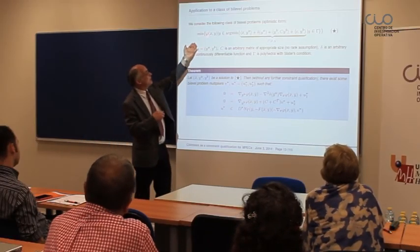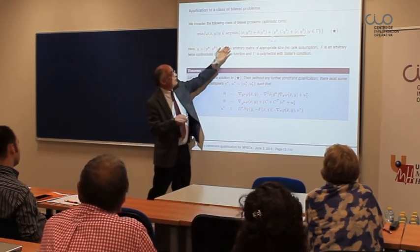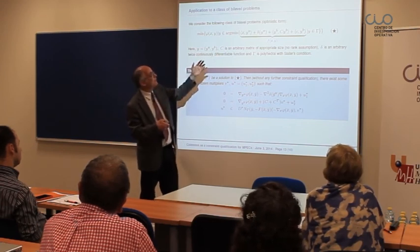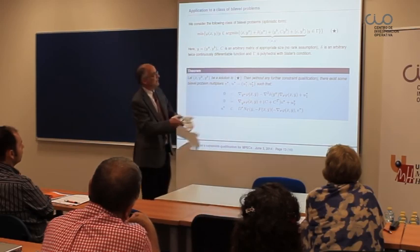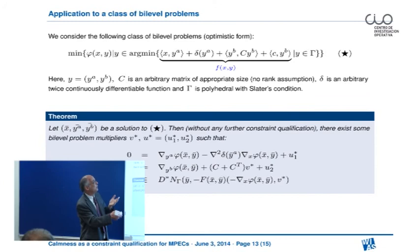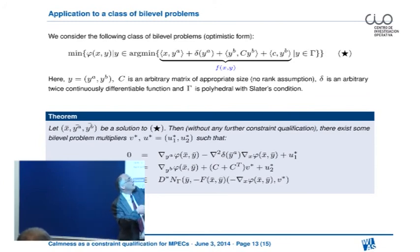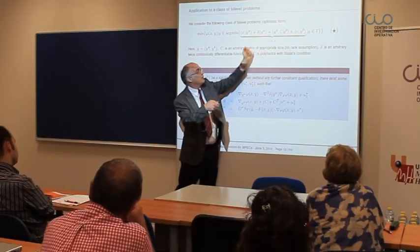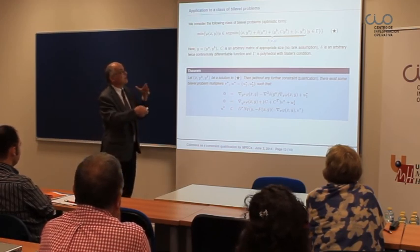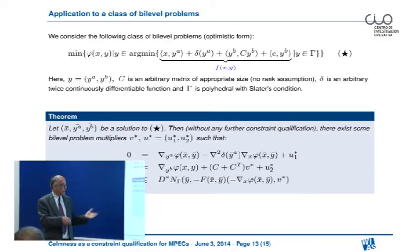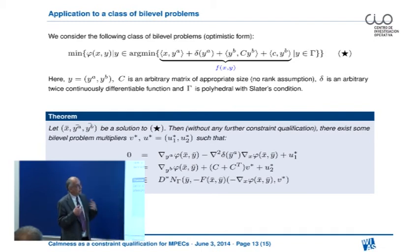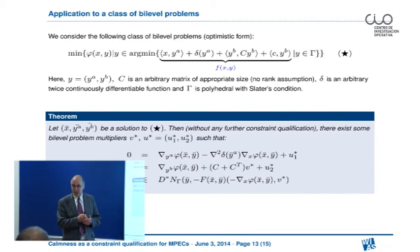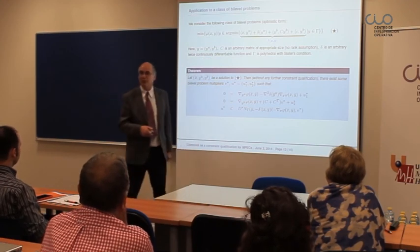This can be used to identify a whole class of bi-level problems where you get the calmness for free. We minimize an upper-level objective function, and the lower-level objective function is required to have a specific form: we split the variable Y into a Y_A part and a Y_B part. The Y_B part enters as a quadratic function, and the Y_A part is a linear function plus an arbitrary smooth function, while gamma is supposed to be a polyhedron. For this whole class of functions you get the calmness due to the previous result and can immediately write down the necessary optimality conditions. This class is not artificial — we encountered it in identifying equilibria in electricity spot market problems, where exactly this structure appeared and it was possible to apply this result.